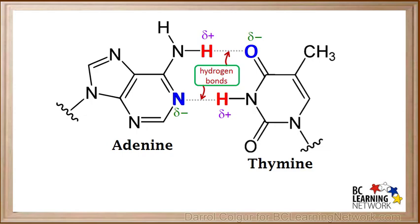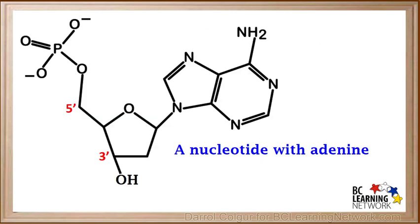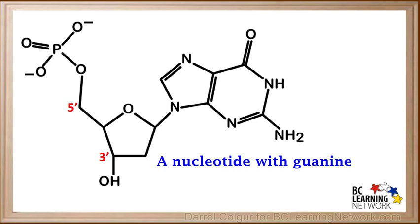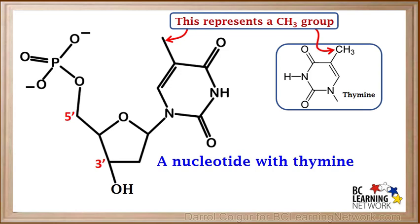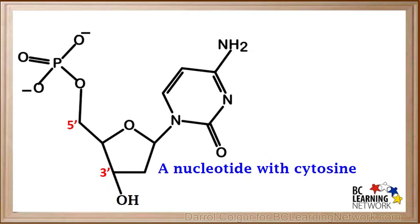Recall that the bases adenine and thymine also fit together perfectly to form two hydrogen bonds — adenine always pairs up with thymine. Here is a diagram of a nucleotide with the base adenine, written with the phosphate group on the top left, with the 5 prime carbon above the 3 prime carbon. Here is a nucleotide with the base guanine, also written with the phosphate group on the top left and the 5 prime carbon above the 3 prime carbon. Here is a nucleotide with thymine as the base. In the model used before, thymine had a CH3 group attached to its ring; in this model, a single solid line represents a carbon atom with three hydrogens, or a CH3 group — just two different ways of representing the same thing. Here is a nucleotide with the base cytosine.